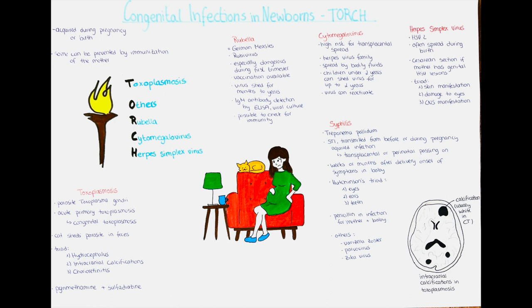When we say skin manifestations, we usually see vesicles appearing on the skin and scarring. When we talk about damage to the eyes, we especially see chorioretinitis — the same finding we discussed for toxoplasmosis. Central nervous system manifestations can be many; examples include microcephaly or hydrocephaly. This triad is not always seen, fortunately.